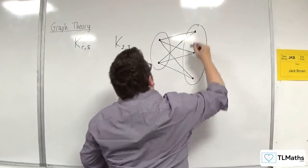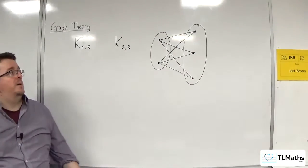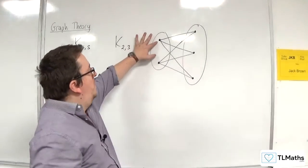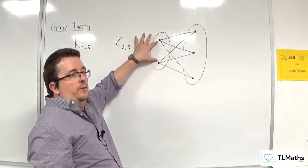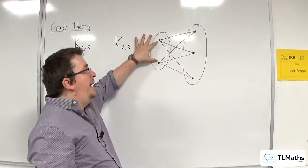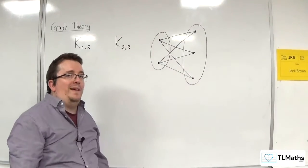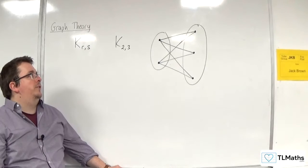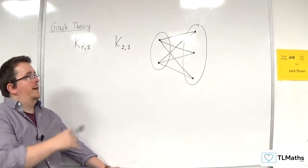It might seem odd to call it complete, because clearly these two aren't connected. But because they are in one set, you can't connect them and still call it a bipartite graph. So a complete bipartite graph would look like this.